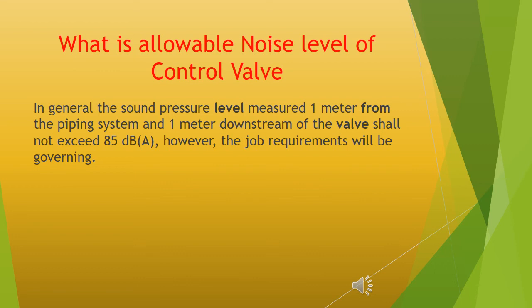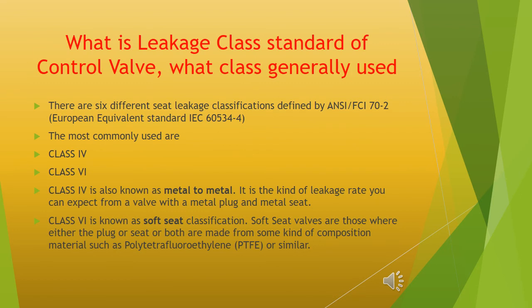What is the leakage class standard of a control valve, and which class is generally used? There are six different seat leakage classifications defined by ANSI FCI 70-2; the European equivalent standard is IEC 60534-4. The most commonly used are Class 4 and Class 6. Class 4 is also known as metal-to-metal — it is the kind of leakage rate expected from a valve with a metal plug and metal seat. Class 6 is known as soft seat classification; soft seat valves are those where either the plug, seat, or both are made from a composition material such as PTFE or similar.